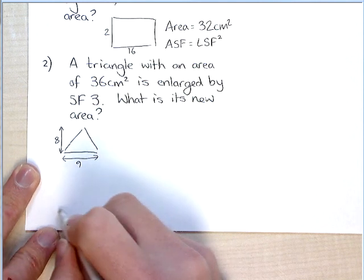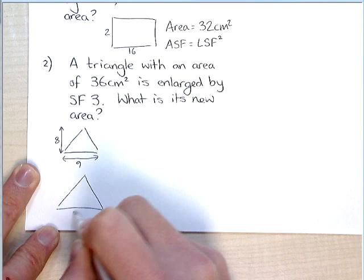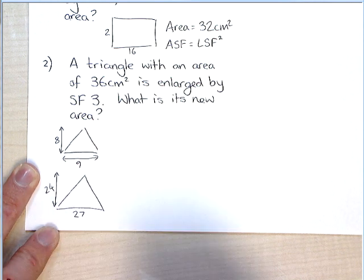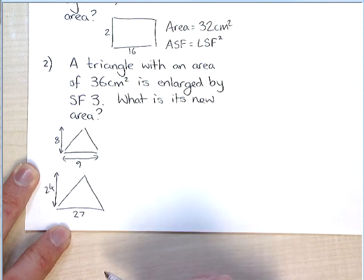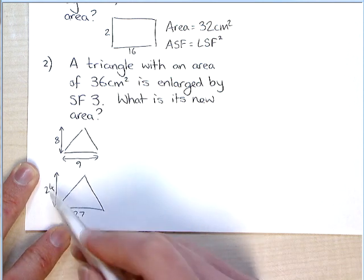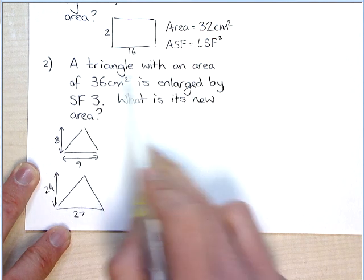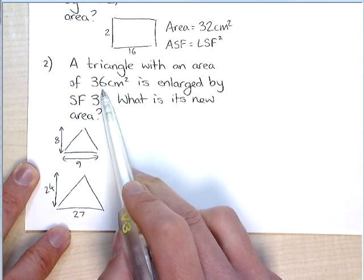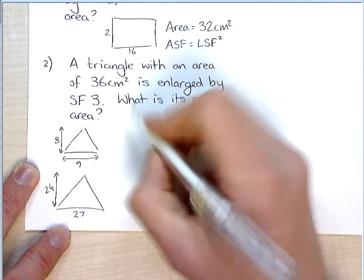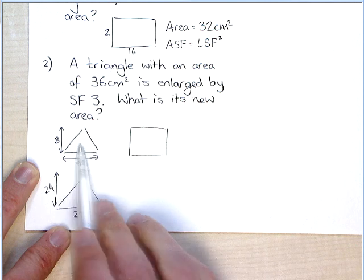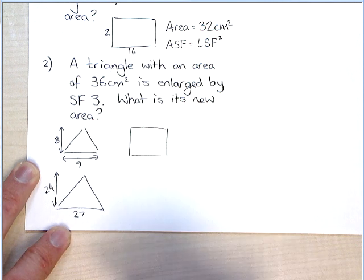So if I enlarge it by scale factor 3, what I'm going to have now is 27 and 24. And I don't really want to do that. I don't really want to multiply these two together and then halve them. So what you can actually do, because it doesn't actually matter if it's a triangle, the area is 36. So personally what I would prefer to do is maybe just draw a rectangle, because as long as it has the same area, it's not going to make any difference at all.